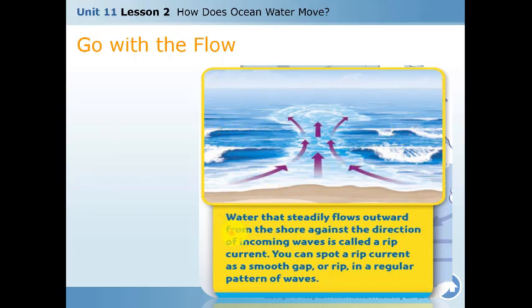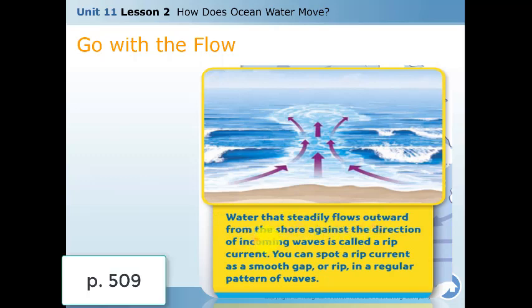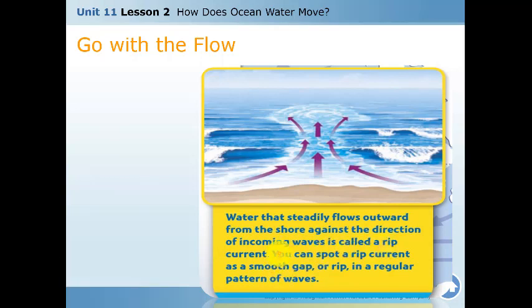Water that steadily flows outward from or against the direction of other waves is called a rip current. Be careful with rip currents because they can pull you out into the ocean — it is like a trap you cannot get out of. When different currents change, the wave movement changes, and that creates a rip current.